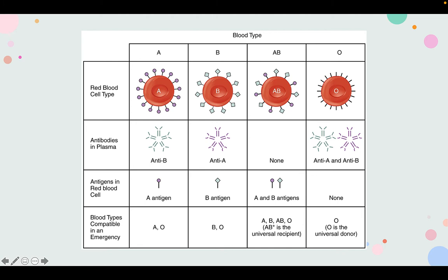Type A blood has anti-B antibodies automatically. This is to prevent a foreign blood type from mixing in, because that would cause an inflammatory and immune response. These anti-B antibodies will cause agglutination and hemolysis if they ever encounter erythrocytes with B antigens.